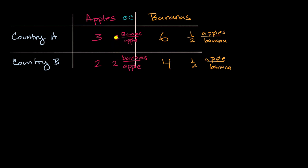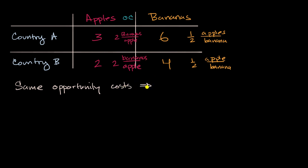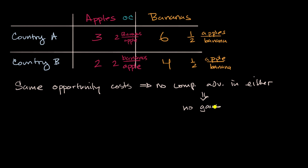This is a little bit interesting. They have the same opportunity cost for apples in terms of bananas, and they have the same opportunity cost for bananas in terms of apples. Because they have the same opportunity costs, there is no comparative advantage — no comparative advantage in either. And so, based on our very simple model here, there are no gains from trade.